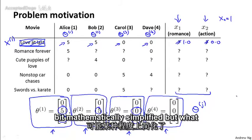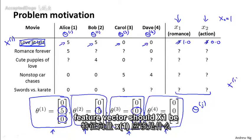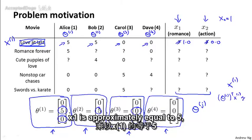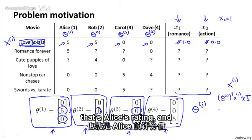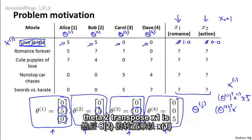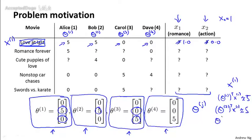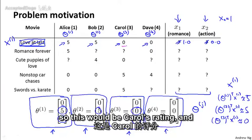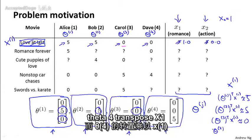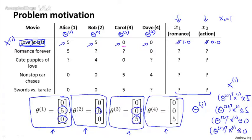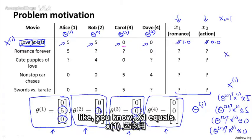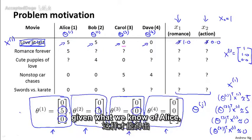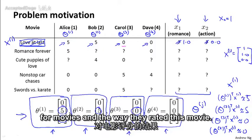This example is a little bit mathematically simplified. But what we're really asking is what feature vector should x1 be? So that theta 1 transpose x1 is approximately equal to 5. That's Alice's rating. And theta 2 transpose x1 is also approximately equal to 5. And theta 3 transpose x1 is approximately equal to 0. So this would be Carol's rating and theta 4 transpose x1 is approximately equal to 0. And from this it looks like x1 equals 1. That's the intercept term and then 1.0, 0.0. That makes sense given what we know of Alice, Bob, Carol, and Dave's preferences for movies and the way they rated this movie.